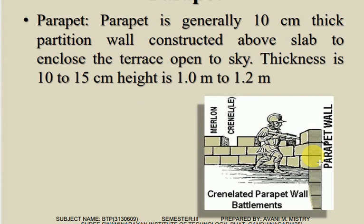Parapet wall is generally 10 cm thick. It is constructed above the slab to enclose the terrace open to sky. Parapet wall thickness is 10 to 15 cm and height is 1 to 1.2 meters.